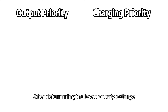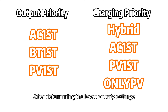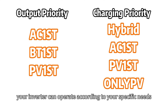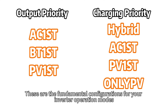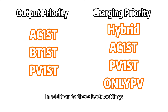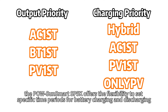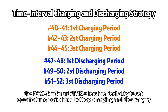After determining the basic priority settings, your inverter can operate according to your specific needs. These are the fundamental configurations for your inverter's operation modes. In addition to these basic settings, the Pole SoundSmart SP5K offers the flexibility to set specific time priorities for battery charging and discharging.